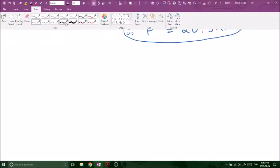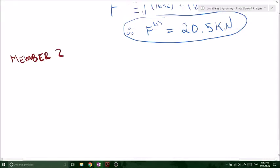So now we want to do member 2. If member 2, same thing, you've got to find your K2, right?